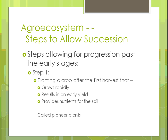There are different steps you can take to allow succession and recovery to happen. The first step is planting a crop after the first harvest that grows rapidly, gives an early yield, and puts nutrients back into the soil. These are called pioneer plants — pioneering in the sense of those who first came out to break the soil of the West.